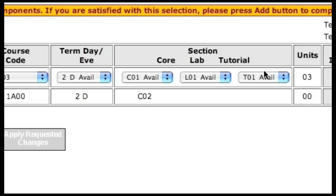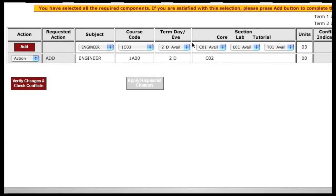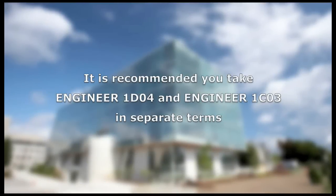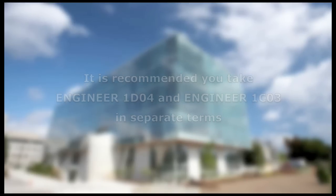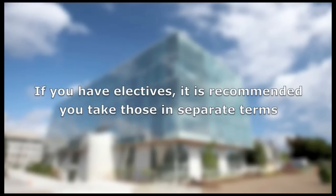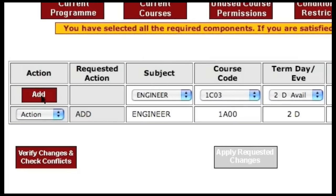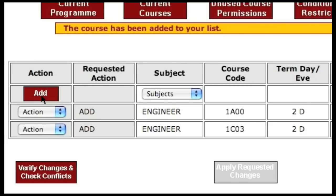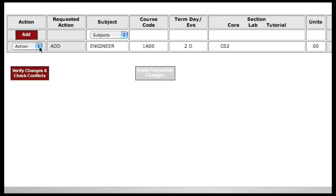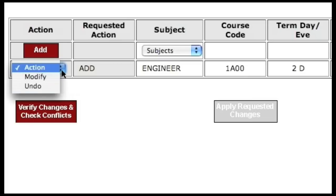For most engineering courses, the terms are quite well defined. However, some courses in Engineering you'll want to take in separate terms — for example, Engineering 1D04 and Engineering 1C03 for Engineering 1 students. It is highly recommended to take those in separate terms because of the high workload. You'll also have the option of selecting a term for many of the complementary electives, and it is recommended you take these in separate terms. Once you're done with a course, click on the Add button on the left side to add it to your list, then repeat the steps to continue adding more courses. If you've made a mistake after adding a course, click on the drop-down box on the left and choose Modify or Undo, which will delete the course.